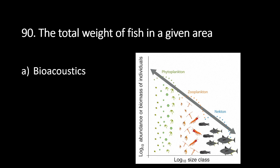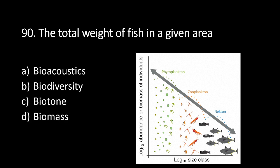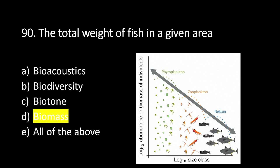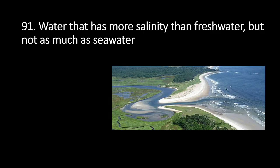Number 90: the total weight of fish in a given area is called A. Bioacoustics, B. Biodiversity, C. Biotone, D. Biomass, E. All of the above. The answer is D. Biomass. Biomass refers to the total weight of fish in a given area.